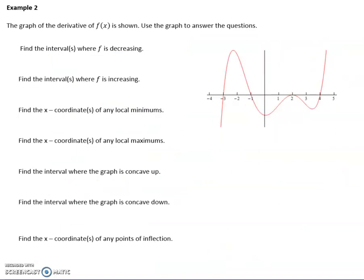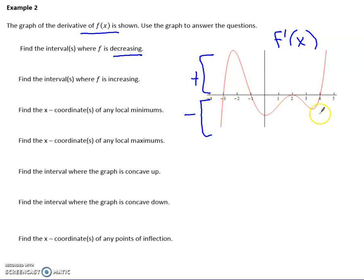Let's try a second example. Again, this is the graph of the derivative — mark that for yourself, because this is already slope. Where are my intervals of decreasing? When I say decreasing, I mean negative slope. So it's negative from negative infinity until x = −3, and also from x = −1 — because it stays negative — to x = 4.